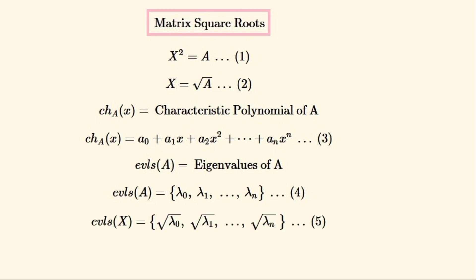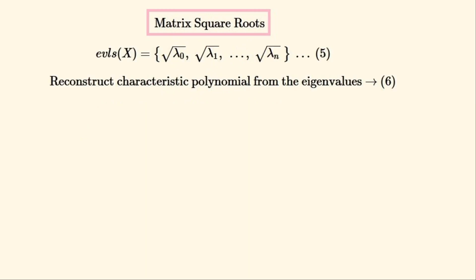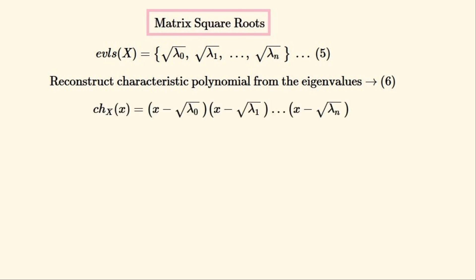These are the eigenvalues of the matrix X, which is the square root of A. All of the eigenvalues in this list are the square roots of the eigenvalues of A, which we'd find in a diagonal matrix. After rewriting the top equation, we reconstruct the characteristic polynomial of matrix X from these eigenvalues by creating a product of degree-1 polynomials so that these eigenvalues are the roots. If an eigenvalue appears twice in the list, it appears twice in this product.